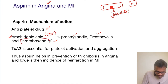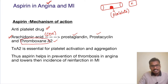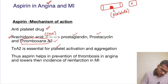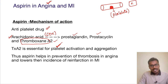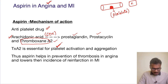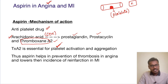Out of these three, thromboxane A2 is itself produced by the platelet, and at the same time thromboxane A2 is an essential element for platelet activation as well as aggregation. So if somebody can stop arachidonic acid from forming thromboxane A2, it will be helpful in stopping platelet aggregation.